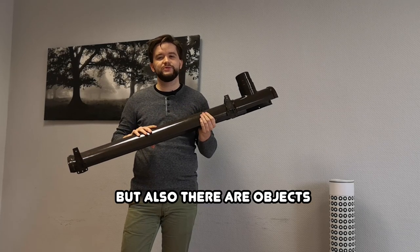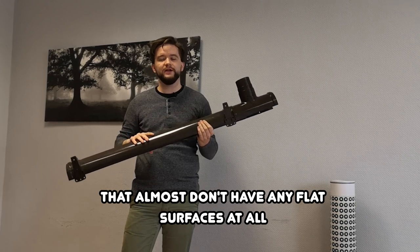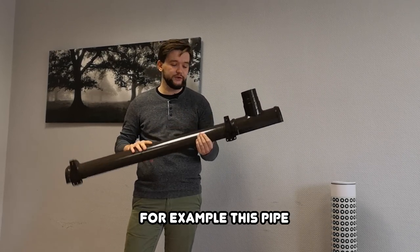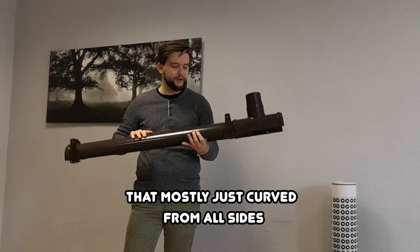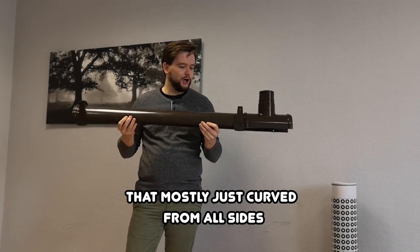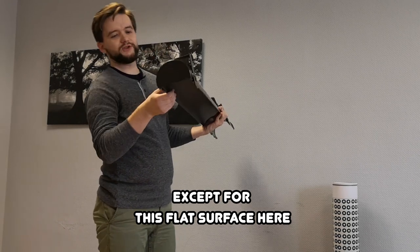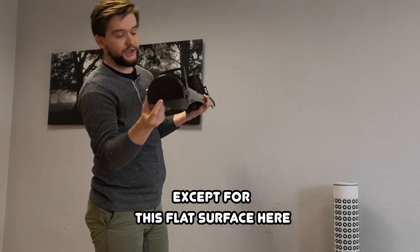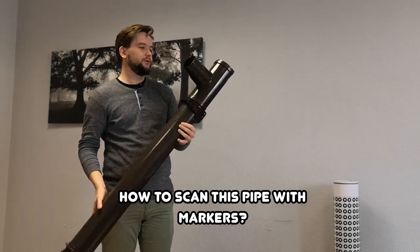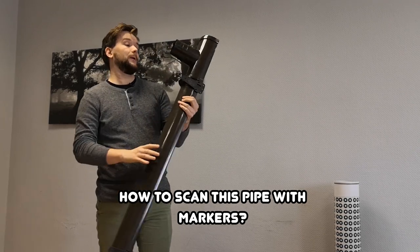But also there are objects that almost don't have any flat surfaces at all. For example, this pipe that mostly is just curved from all sides aside from this flat surface here. So how to scan this pipe with markers?